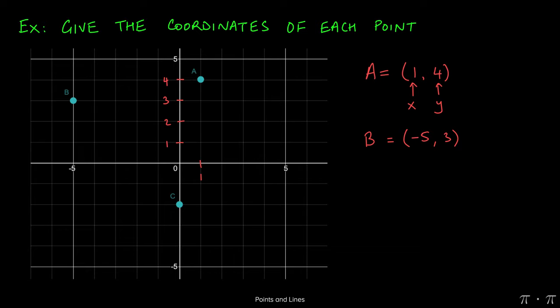Lastly, for C, this is an obvious easy one perhaps. We're not really moving to the left or to the right at all on the x-axis. All we're doing is moving two units down. This gives us coordinates for C as zero comma negative two.